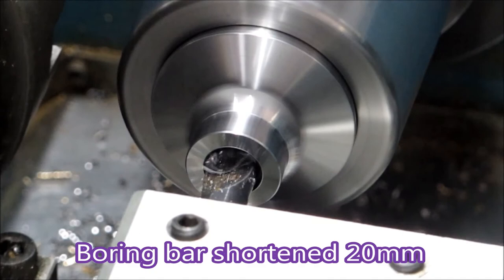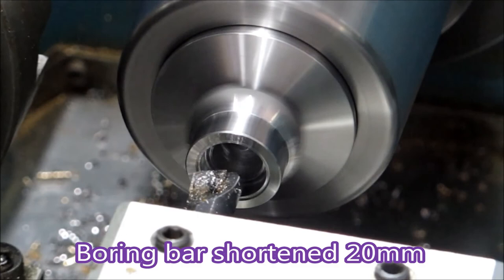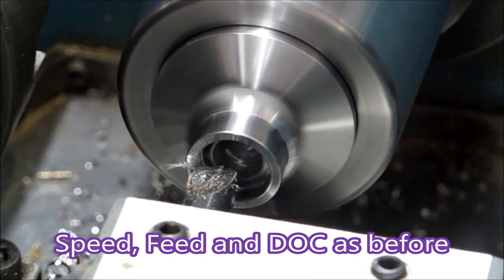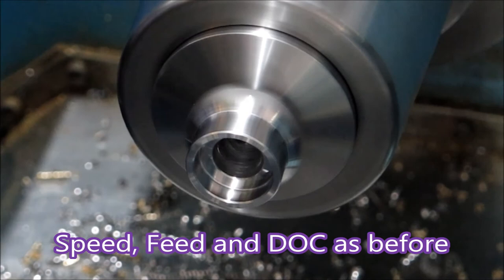So, I moved the boring bar in to where it should have been and got much better results. No horrible screeching noises. Just left it as it was. Adjusted the Z for the shortened boring bar. And look at that finish.